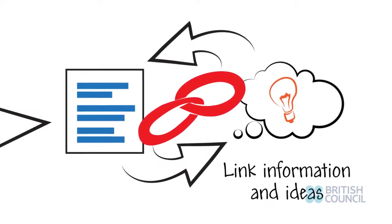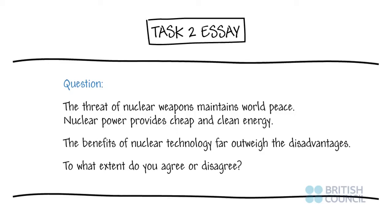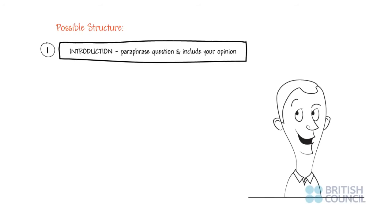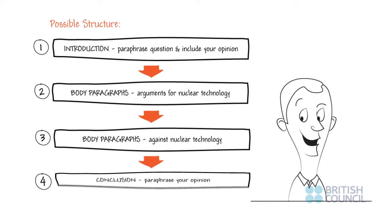Here is one simple way to sequence ideas for effective coherence for a Task 2 essay. For example, the question: 'The threat of nuclear weapons maintains world peace. Nuclear power provides cheap and clean energy. The benefits of nuclear technology far outweigh the disadvantages. To what extent do you agree or disagree?' Introduction: paraphrase the question and include your opinion. Body paragraphs: arguments for nuclear technology. Body paragraphs: arguments against nuclear technology. Conclusion: paraphrase your opinion.